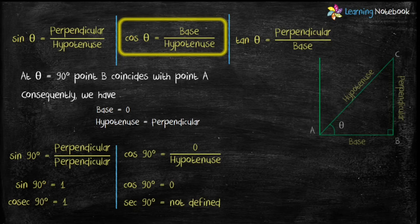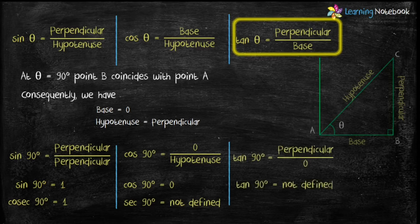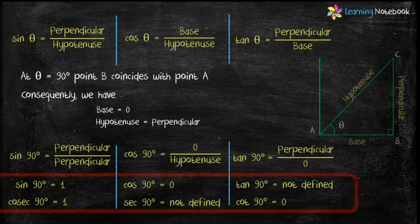Putting the values into tan theta equals perpendicular upon base, we get tan 90° equals perpendicular upon 0, which is not defined. Therefore cot 90° equals 1 upon tan 90°, which equals 0. These are the values of trigonometric ratios at theta equals 90°.